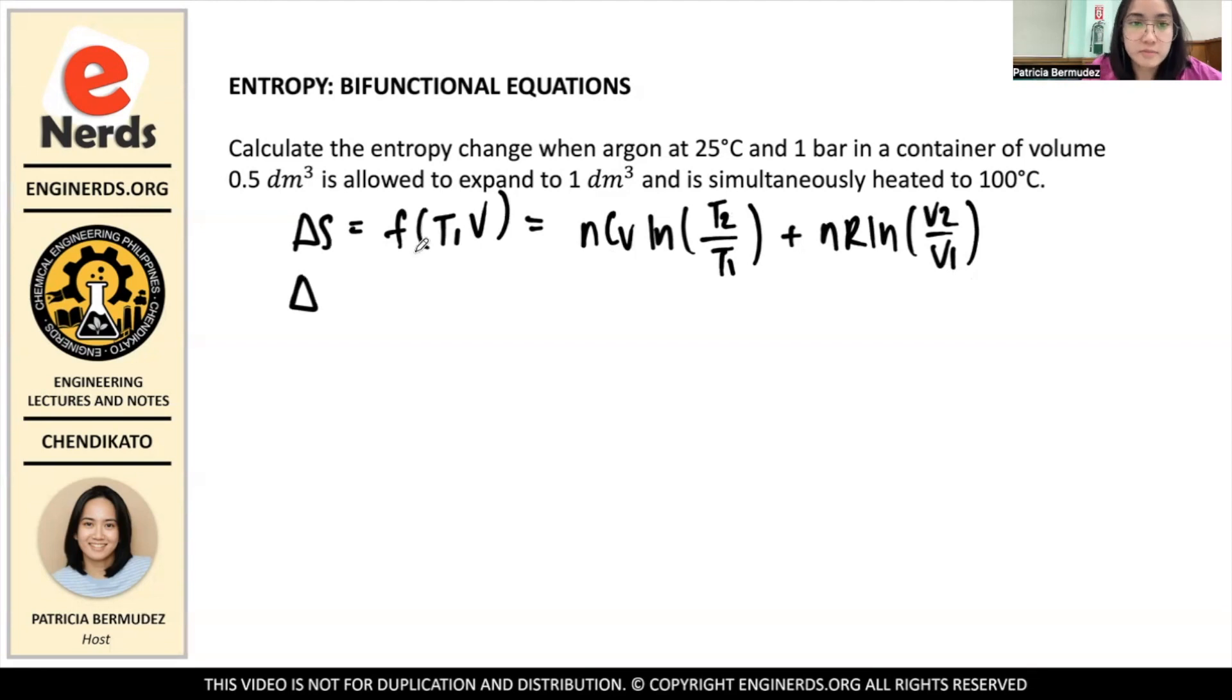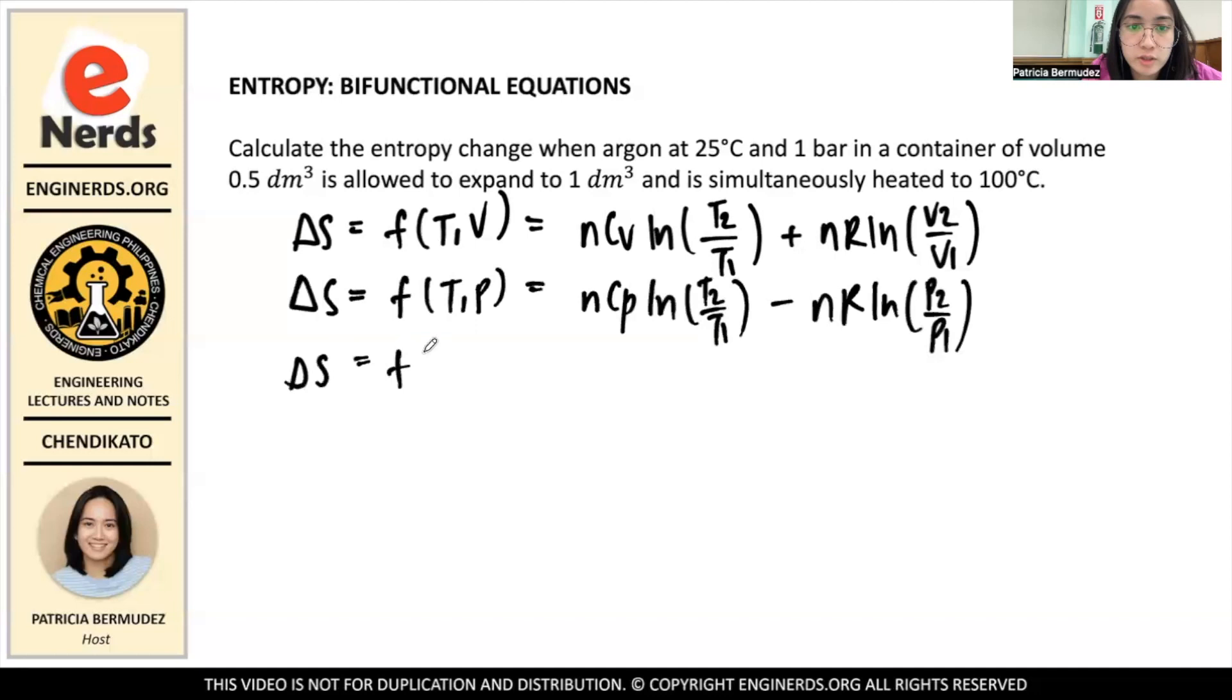And then if your change in S is a function of temperature and pressure, then it is N·Cp·ln(T2/T1) minus N·R·ln(P2/P1). And lastly, when your entropy is a function of pressure and volume, then it becomes N·Cp·ln(V2/V1) plus N·Cv·ln(P2/P1).